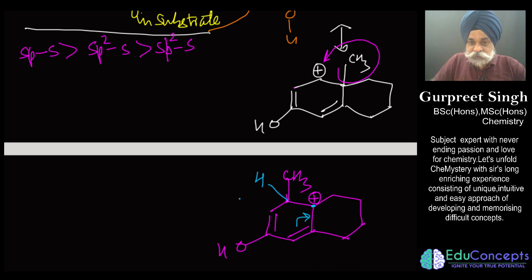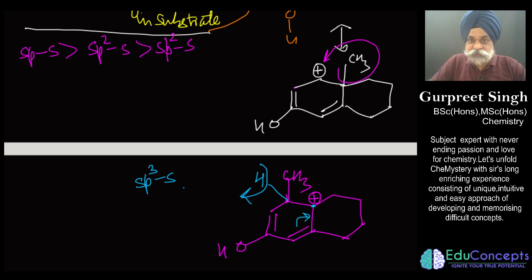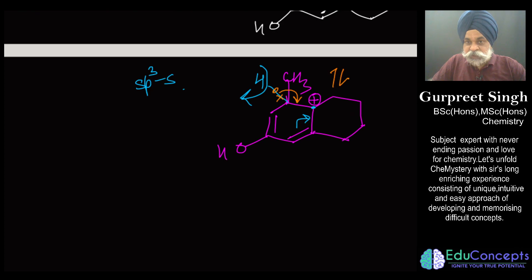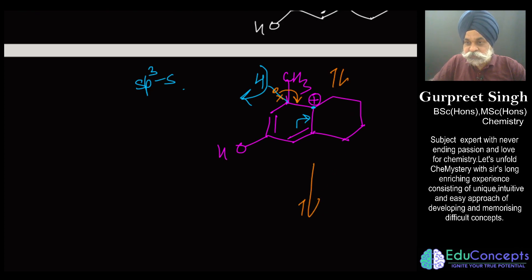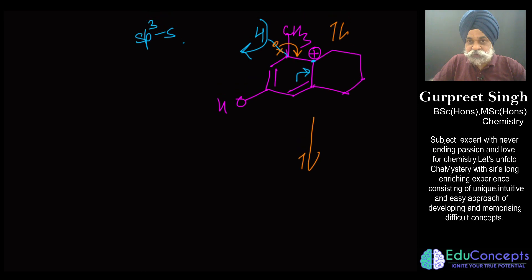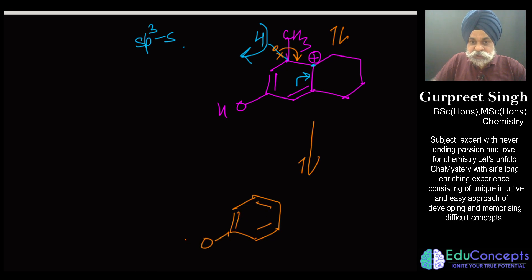Now there is a hydrogen of the sp³ type whose bond energy is lower. If we remove this H⁺ and place the two electrons into the ring, the species becomes aromatic — a benzoid ring is formed. This is highly forward-driven because aromaticity is attained, making the product very stable.